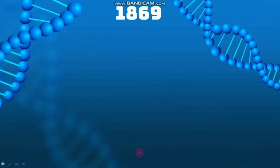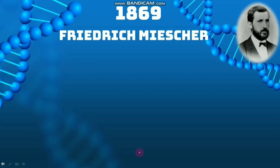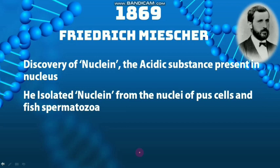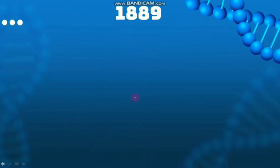The next year is 1869, where Frederick Miescher discovered Nuclein — an acidic substance present in the nucleus. For this discovery, he was observing the nuclei of pus cells and fish spermatozoa, and he called the acidic substance found in those nuclei 'Nuclein.'